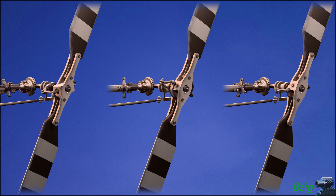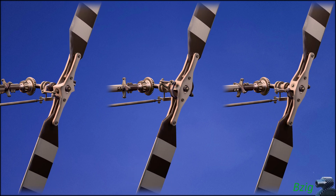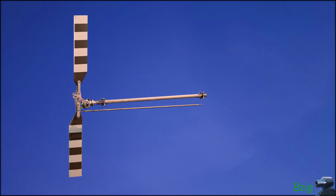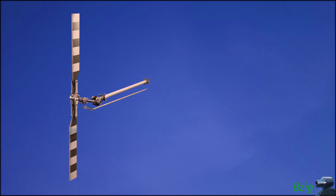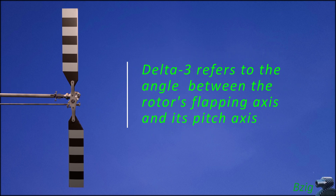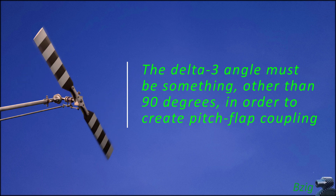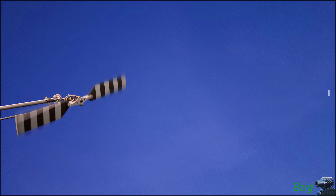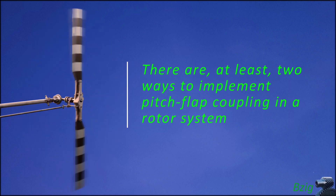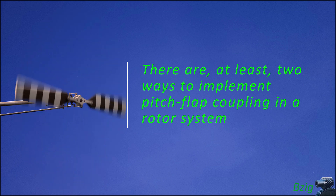My rationale for presenting three different notional designs was to help understand the different ways of implementing pitch flap coupling. Here's a recap: pitch flap coupling is mechanical coupling in rotor systems where flapping motion of the blades causes a pitch motion. Delta-3 refers to the angle between the rotor's flapping axis and its pitch axis, and this angle has to be something other than 90 degrees to create pitch flap coupling. Helicopter tail rotors often use pitch flap coupling to prevent forward flight dissymmetry of lift. There are at least two ways to implement it: one uses the skewed axis flapping hinge, and the other uses pitch control rods that are offset from the blade's flapping axis.